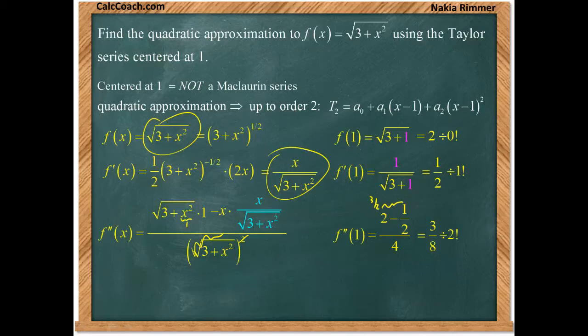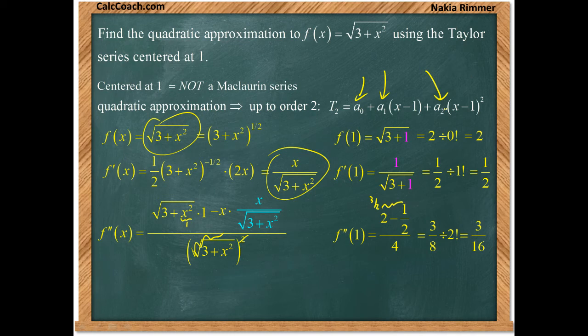Well, 0 factorial is just 1, so we get a 2. 1 factorial is just 1, so we get a half. 2 factorial is 2, so 3 eighths divided by 2 is 3 sixteenths. These are our coefficients. We just went out and found a1, a0, a1, and a2.